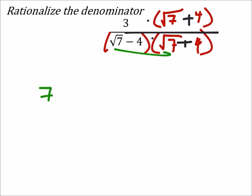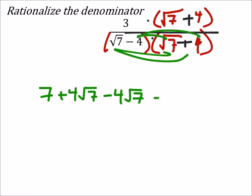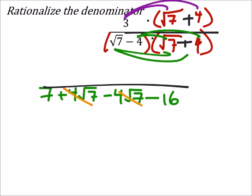The square root of 7 times the positive 4 is the positive 4 square root of 7. Then I've got this negative 4 times the square root of 7, so negative 4 square root of 7. And negative 4 times 4 is the negative 16. Well, some of you guys noticed already that these two are just going to cancel out. And that's in our denominator. In the numerator, we're going to need to distribute this 3, so that would be 3 times the square root of 7, plus 3 times 4 is 12.